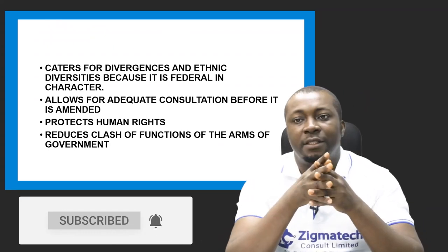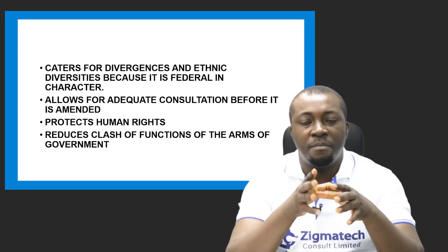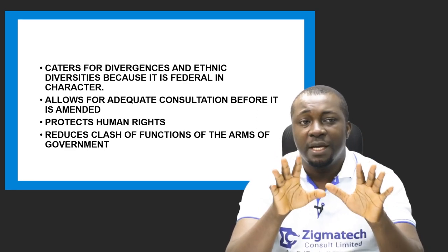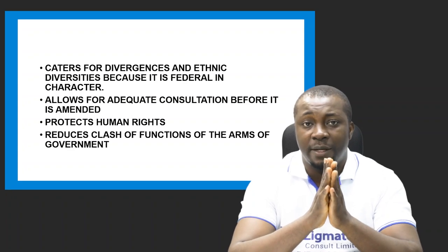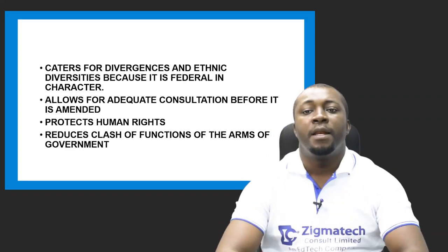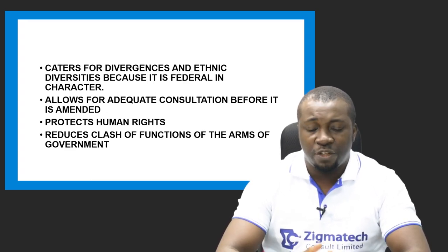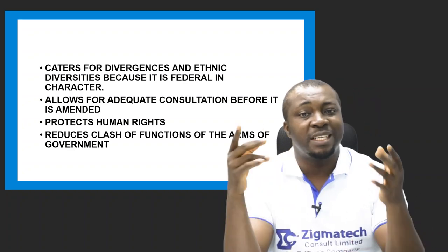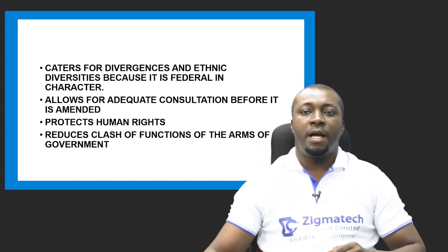A written constitution caters for ethnic diversities because it is federal in character; it allows for adequate consultation before it is amended. It protects human rights because people can easily know their rights from a document that is readily available. It also reduces clashes of functions among arms of government because the constitution clearly defines the powers of each arm, so each one knows its function.